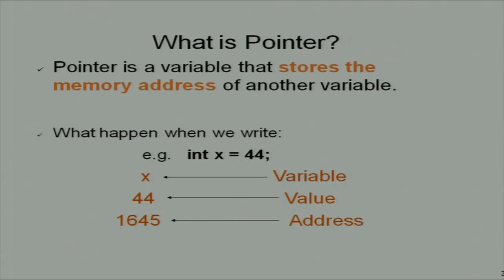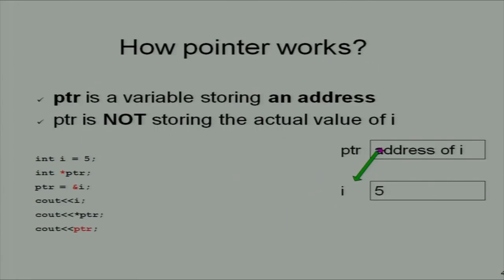The goal is for students to get the concept of pointers — how to use pointers and illustrate the concept through this example. A pointer is a variable that stores the address of another variable. For example, int x = 44. The compiler assigns memory to this variable; the variable name refers to a memory location where 44 is stored, and that memory location has some address, for example 1645.